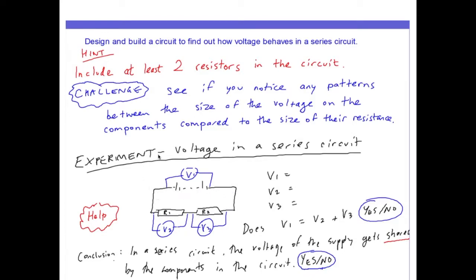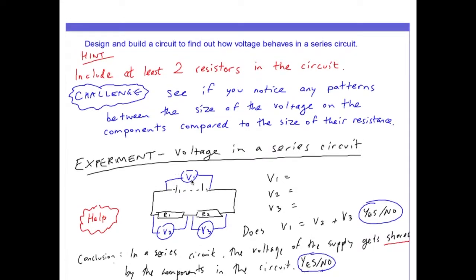Now, how does voltage in a series circuit behave? Voltage is like electrical energy. There's an equation that says energy equals charge times voltage — E equals QV. If we keep the charge constant and just focus on the relationship between energy and voltage, we can see that energy is directly proportional to voltage. So if voltage gets bigger, that makes the energy bigger. Think of voltage as being like electrical energy.